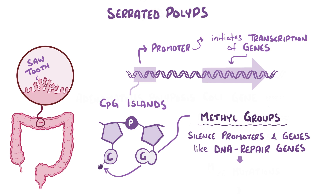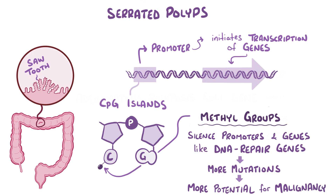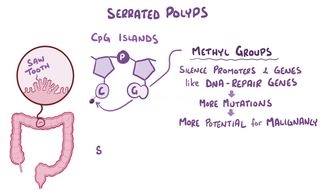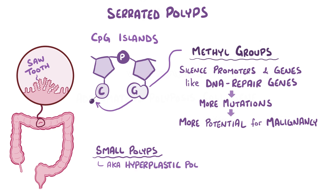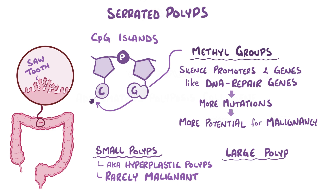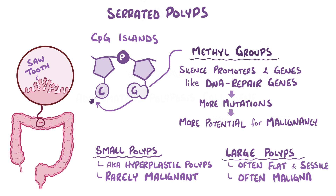This silencing includes DNA repair genes, so by having them silenced, errors during DNA replication don't get fixed. This can lead to a variety of mutations, including ones that cause cells to rapidly divide and potentially become malignant. Small serrated polyps are also known as hyperplastic polyps and are rarely malignant, whereas larger serrated polyps, which are typically flat and sessile, have a greater tendency to become malignant.